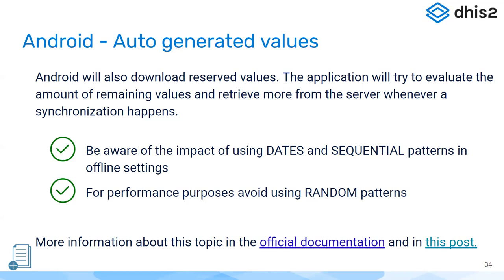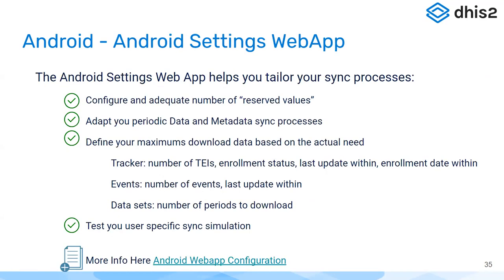The Android Settings Web App lets you limit the amount of data each device downloads per program or per organization unit. These settings are useful when your user configuration cannot be very specific — they allow you to tweak how much data is downloaded per device.